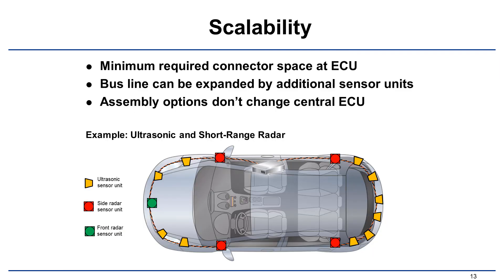Let's focus on scalability. In this example we have an ECU with one bus line in the front and another bus line in the rear, connected to ultrasonic and radar sensors. The ECU requires only minimum connector space with the bus lines. The bus lines can be easily expanded by adding additional sensor units, and very importantly, assembly options don't change the central ECU.